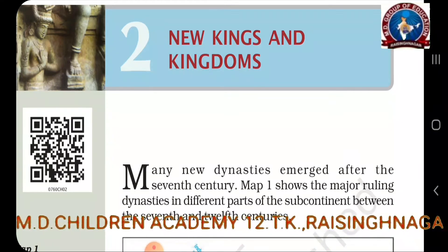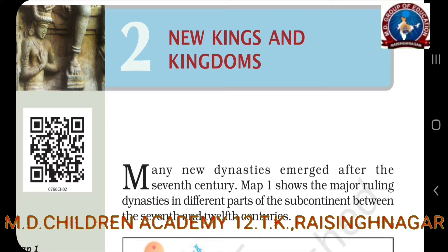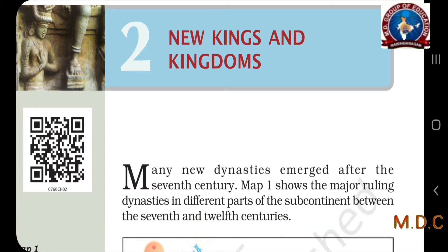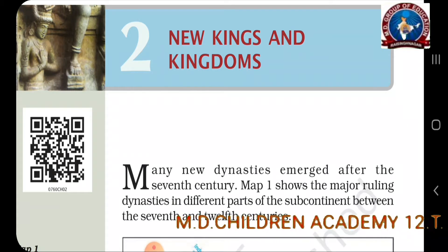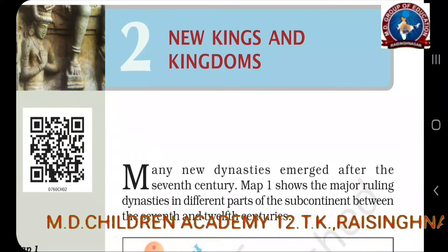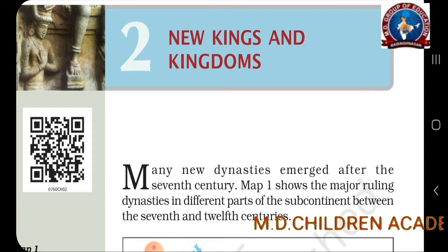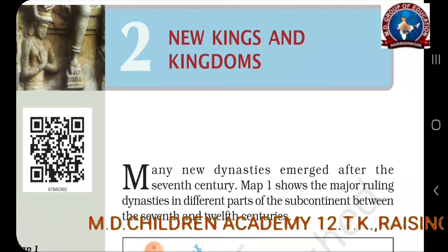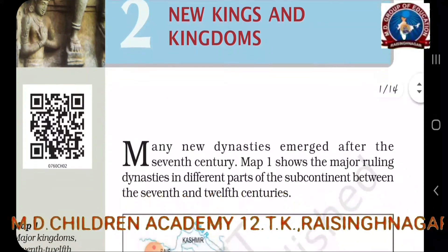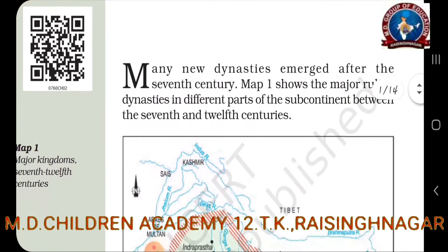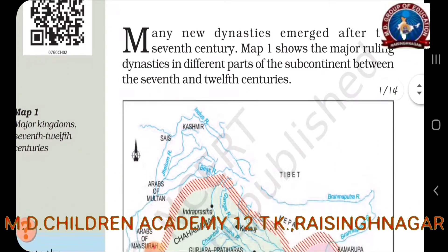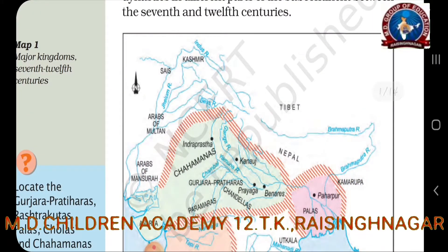Hello students, once again welcome to SST class. In the last video we completed chapter number one of history, and today we are going to start chapter number two of history, that is 'New Kings and Kingdoms.' In this book for class seven, we are going to study about the time period from 700 to 1200. There is a map at the beginning of the chapter which shows the major ruling dynasties in different parts of the subcontinent between the 7th and 12th centuries.